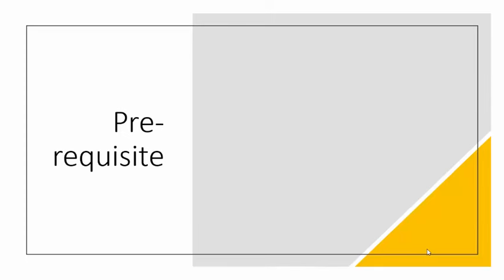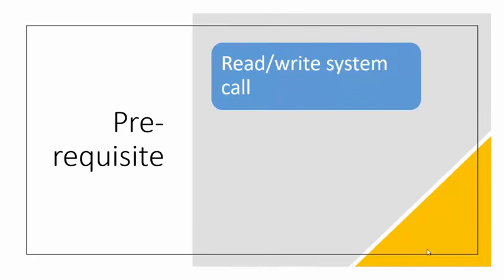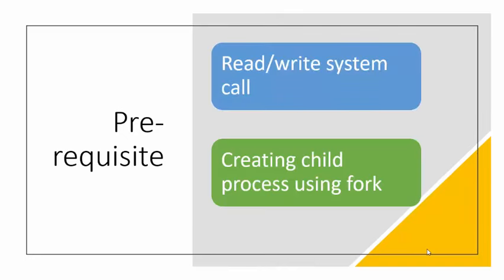To easily understand this, there are two things I would recommend. First, go through the read and write system calls once again, which we covered in lab number one. Second, go through how to create the child process using the fork system call, which we covered in lab 5. If you understand these two labs, understanding this program will be the easiest task so far, because it requires the use of both these concepts only — nothing new. Just one new function, which will be pipe; the rest uses read, write, and fork system calls.